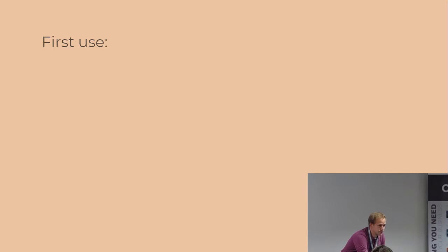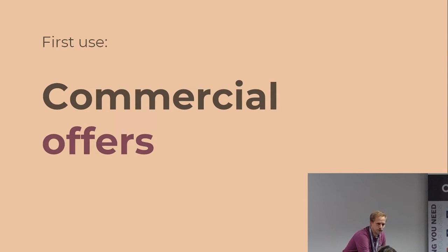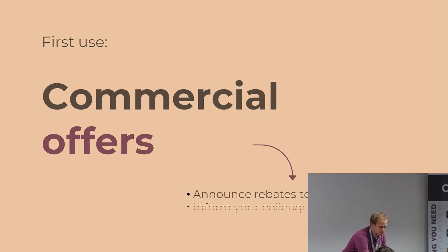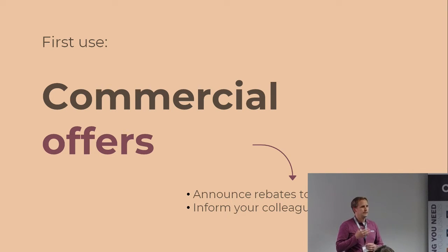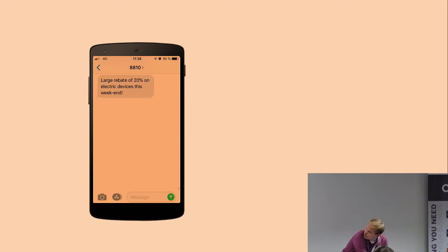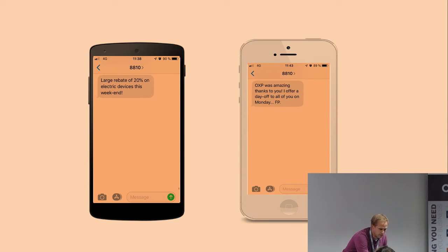Why send SMS with Odoo? There are two different uses. The first one is of course the commercial offer. You can send SMS to announce rebates to your customers, and you can also send SMS to inform your colleagues or partners. For example, you can send your customers a large rebate of 20% on electric devices this weekend. Or you can send your colleagues: 'OXP was amazing, thanks to you — I offer a day off to all of you on Monday.'